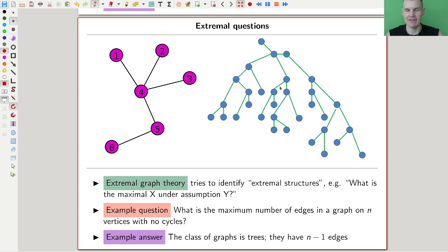The kind of question you would like to keep in mind is the following: what is the maximal number of edges in a graph with n vertices with no cycles? Maximal number of edges, x; no cycles is y. The example answer is it's a tree. It's one of the classical facts in graph theory. I hope you've seen that one before, one of the classical facts. You can have the maximal number of edges is n minus 1, and it's always achieved by a tree.